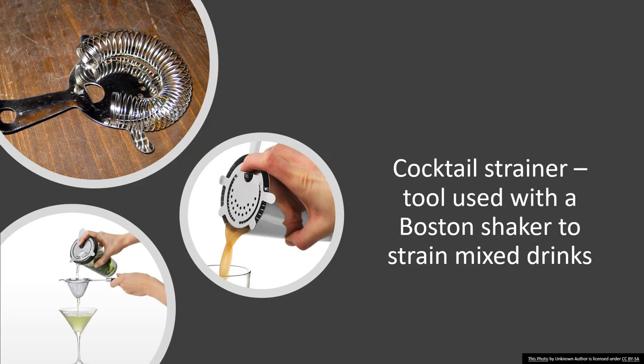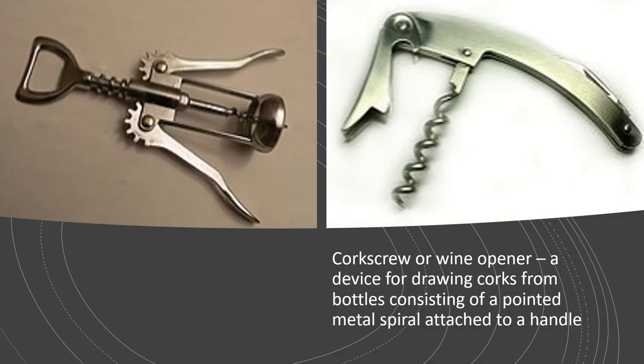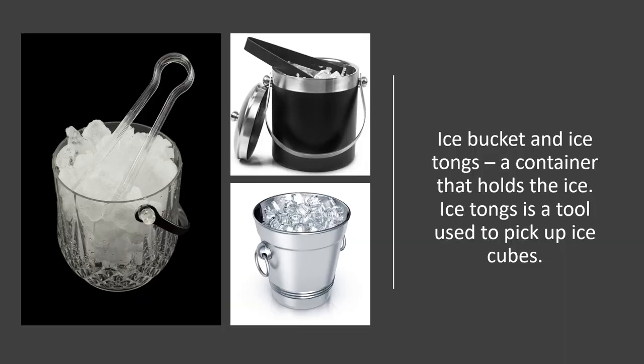A cocktail strainer is a tool used with a Boston shaker to strain mixed drinks. For example, if there is pulp or ice that you don't want to serve in the glass, you use a cocktail strainer. A corkscrew or wine opener is a device for drawing corks from bottles, consisting of a pointed metal spiral attached to a handle. An ice bucket is a container that holds ice, while ice tongs is a tool used to pick up ice cubes or ice tubes.